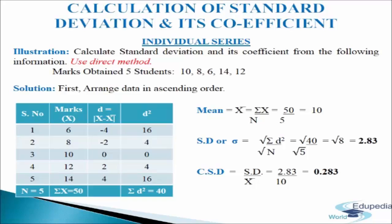Mean = σx / n = 50 / 5 = 10. In the third column we write d = x minus mean. With mean = 10: 6 − 10 = −4, 8 − 10 = −2, 10 − 10 = 0, 12 − 10 = 2, 14 − 10 = 4.